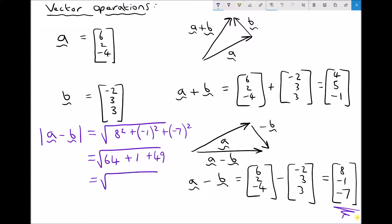So that gives us the square root of 114. And the square root of 114 is just 10.677. So we always have the option of calculating the magnitude.